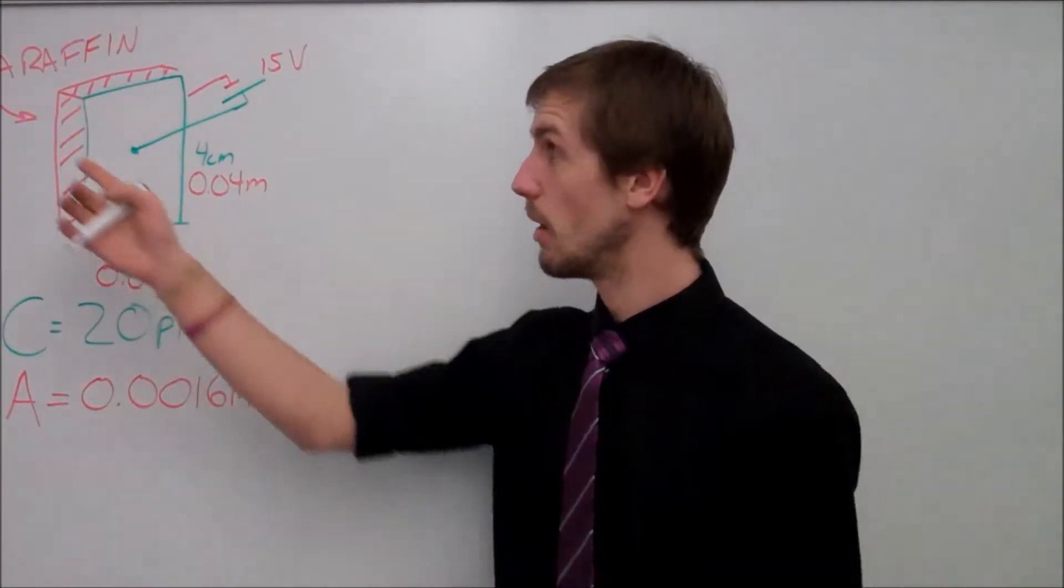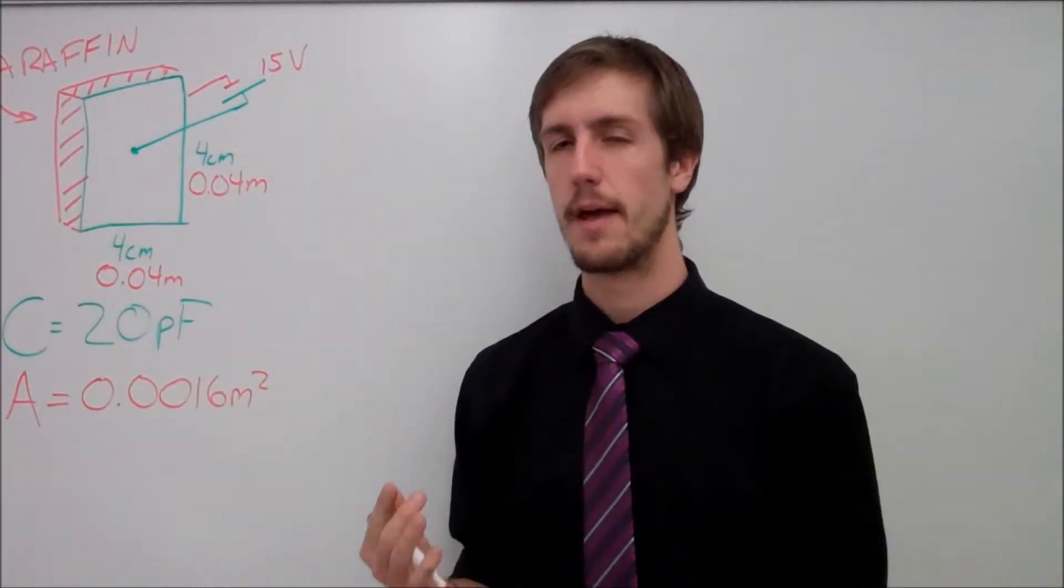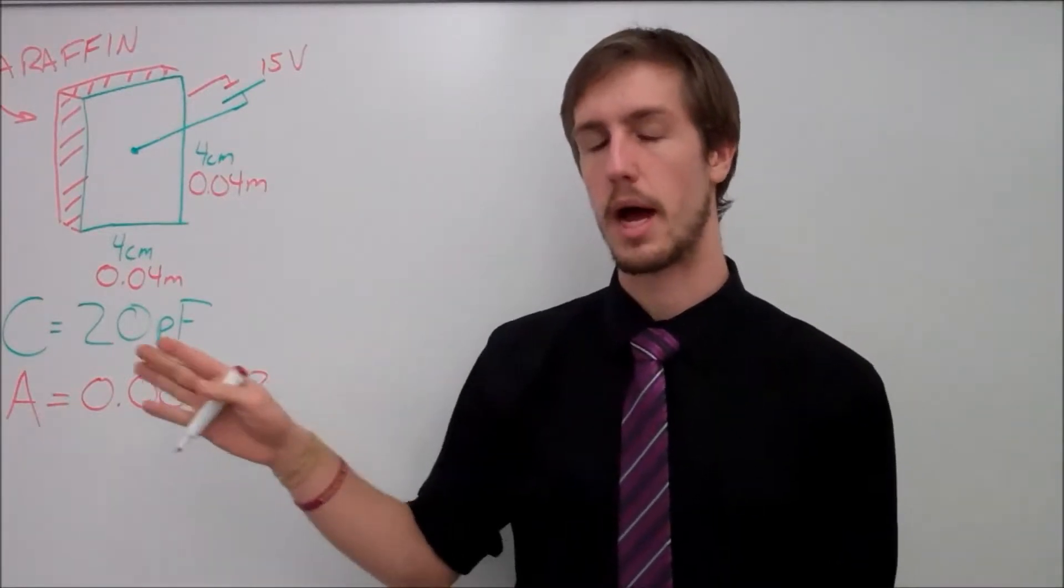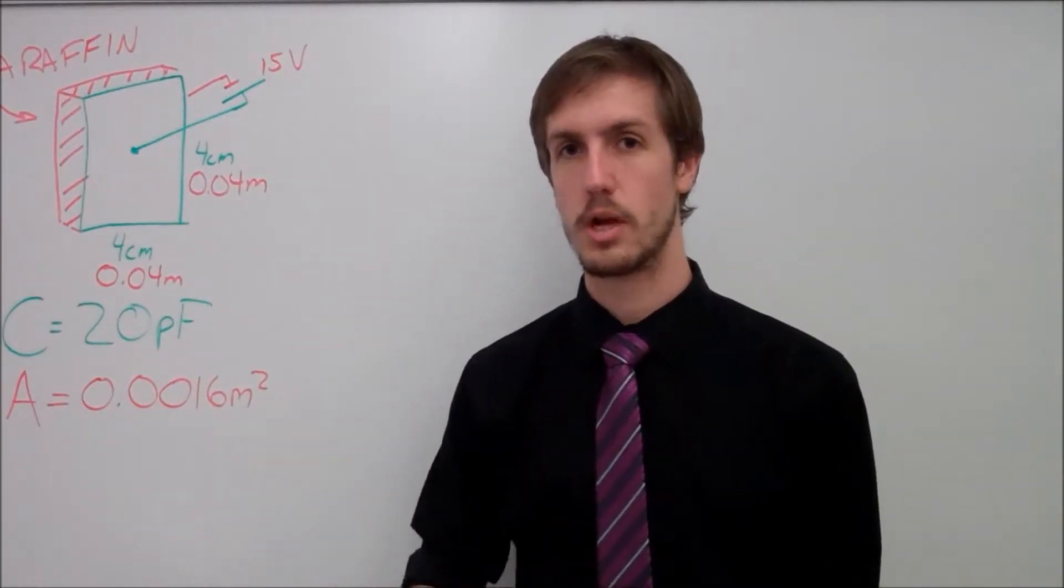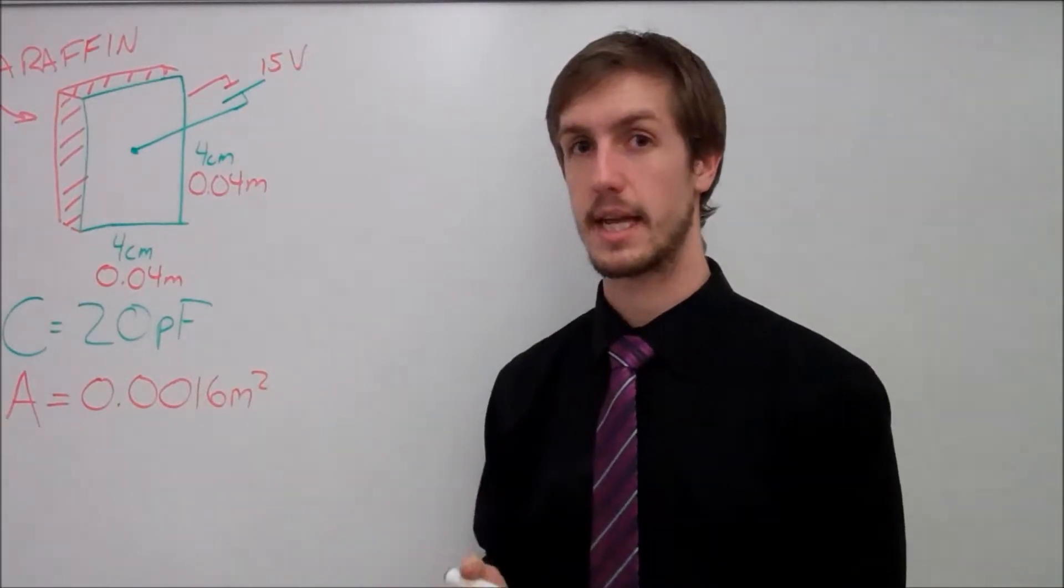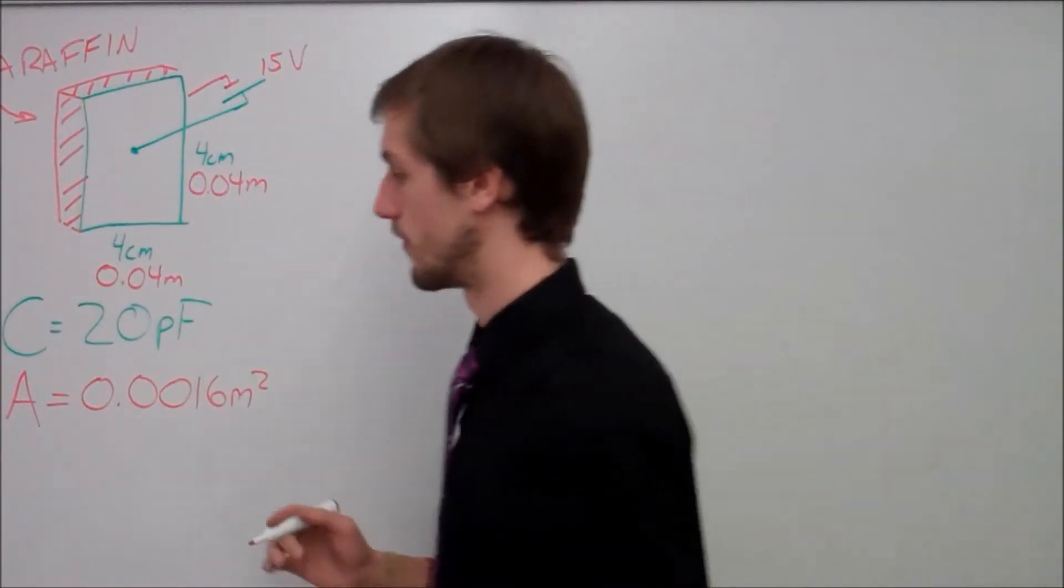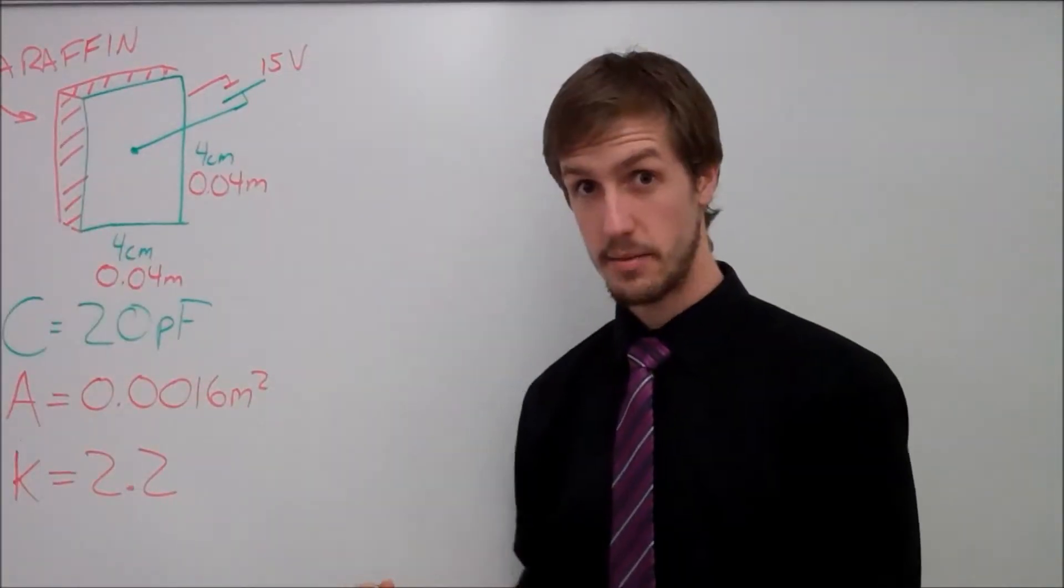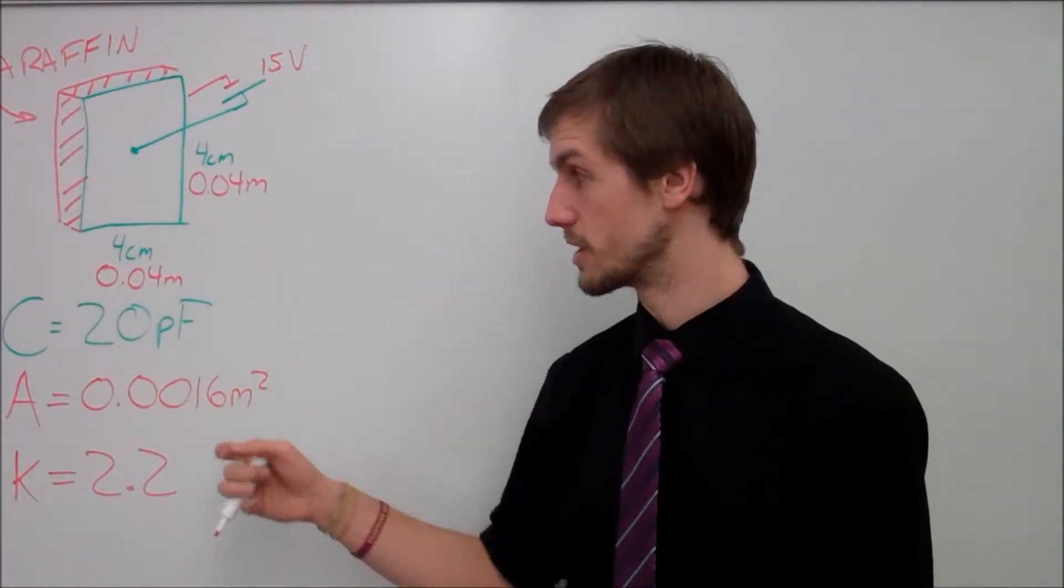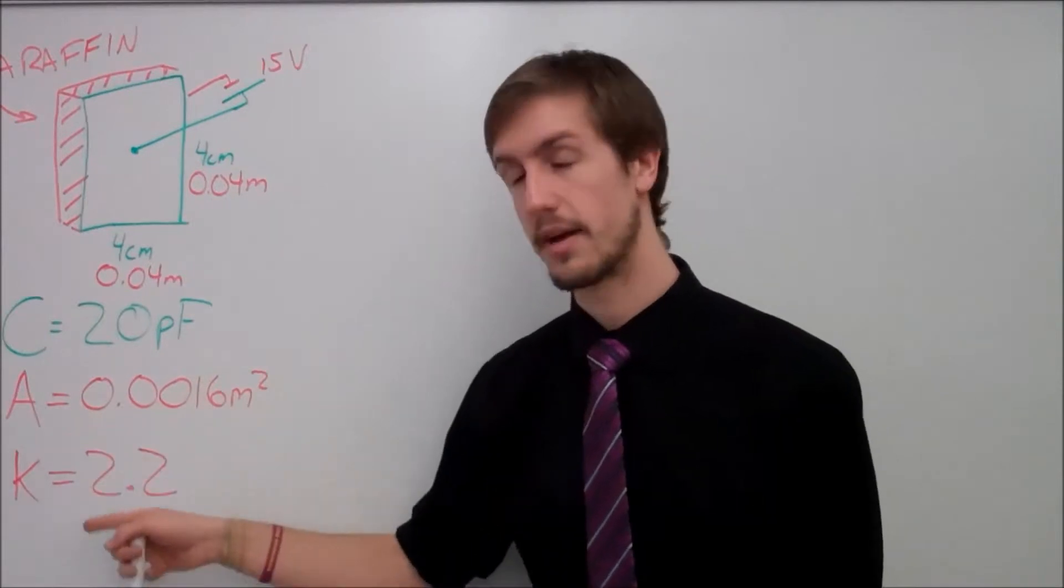Now I also have to find out what paraffin is. What does this mean if I have paraffin in between my two capacitor plates or if I have something like air? So paraffin actually has a K value, which I can look up in our book, of 2.2. Now this kind of gives me a little bit more information of what I can use. I have a capacitance, I have an area, and I have a K value.